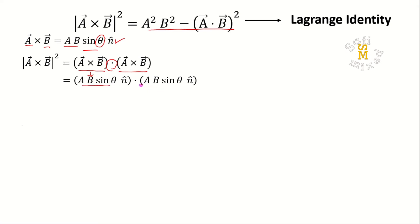Since A B sin theta are numbers, I can rewrite them by squaring: A² B² sin² θ, and the scalar product I can take between the two normal vectors.